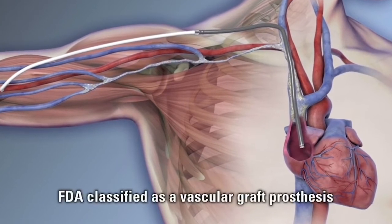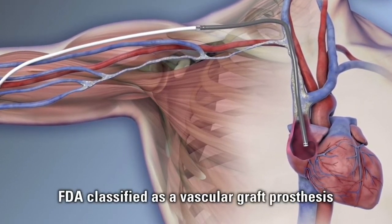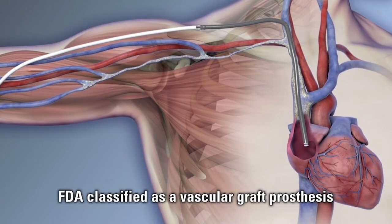HeroGraft is FDA-classified as a graft. However, unlike a conventional graft, there is no venous anastomosis.